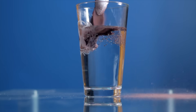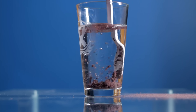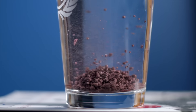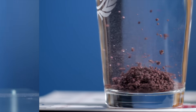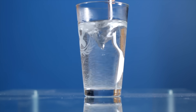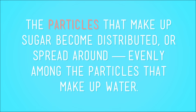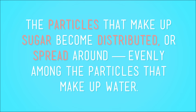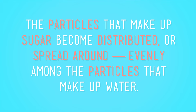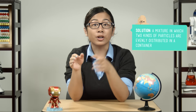For example, if we mix sand and water in a glass, we'll get a mixture, even though after a while the sand will settle to the bottom of the glass. But if we stir some sugar into the water, the sugar looks like it disappears — but it really doesn't! The particles that make up sugar become distributed, or spread around, evenly among the particles that make up water.